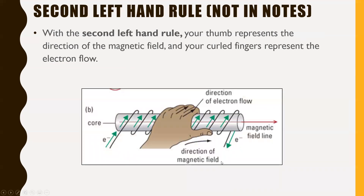The second left hand rule was almost the exact same thing, except the magnetic field and the direction of electron flow just swap. This is where you have a coil of conducting wire wrapped around something. Your curled fingers represent the direction of your electron flow, and your thumb represents the direction of a magnetic field line. This was really useful when you wanted a more predictable magnet. Basically, if you wrap a coil of wire and shoot electricity through it, it turns that coil into a bar magnet — that's the entire idea behind an electromagnet.